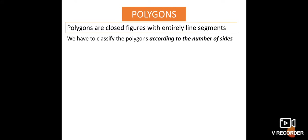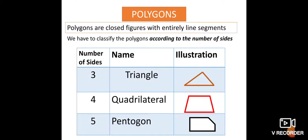We classify polygons according to the number of sides. Here you can see a table with number of sides, name, and illustration. The count starts from three, because one-sided and two-sided figures are not polygons. Three sides is a triangle. Four sides is a quadrilateral, which we just studied. Five sides is a pentagon.